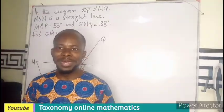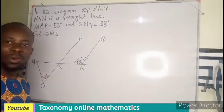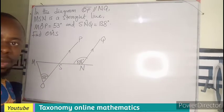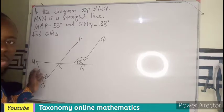Hello, welcome to Taxonomy Online Mathematics. We have a question on plane geometry making use of angle properties of a parallel line and a triangle.